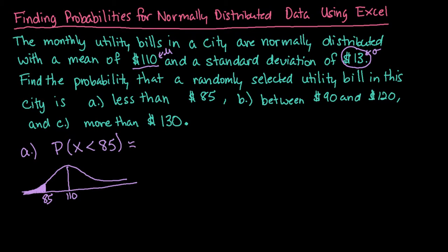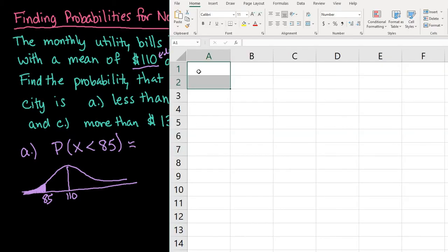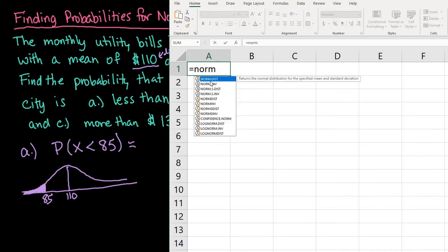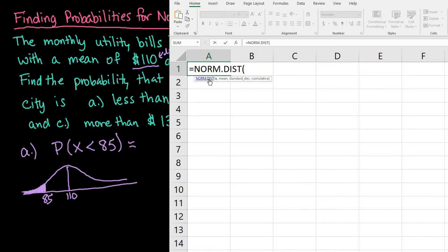Let me grab Excel. We'll select a cell and start typing equals NORM, and I'll do the first one, NORM.DIST. My x value is 85, and since it's to the left, Excel finds the area to the left.